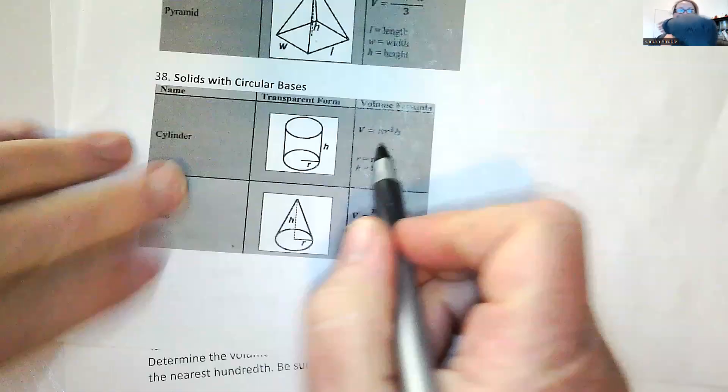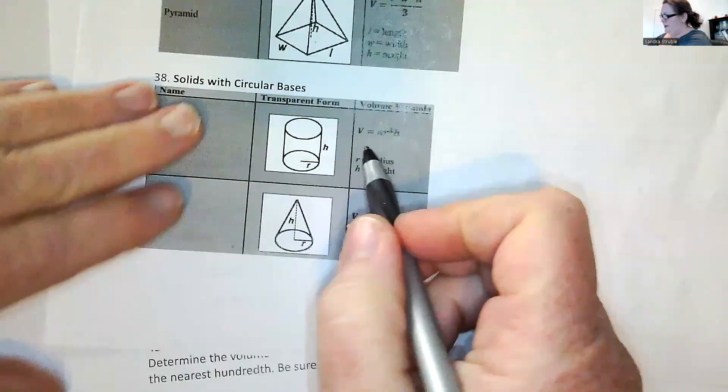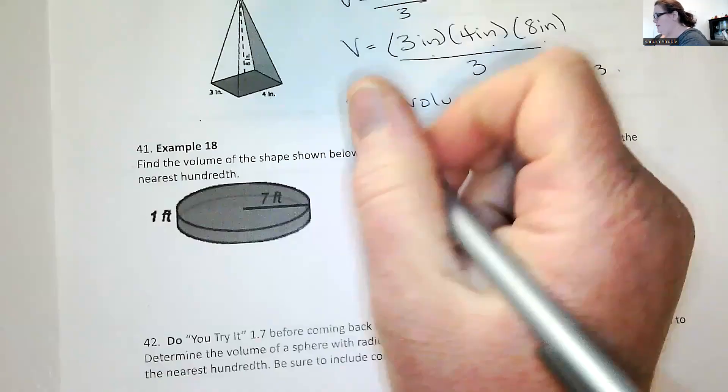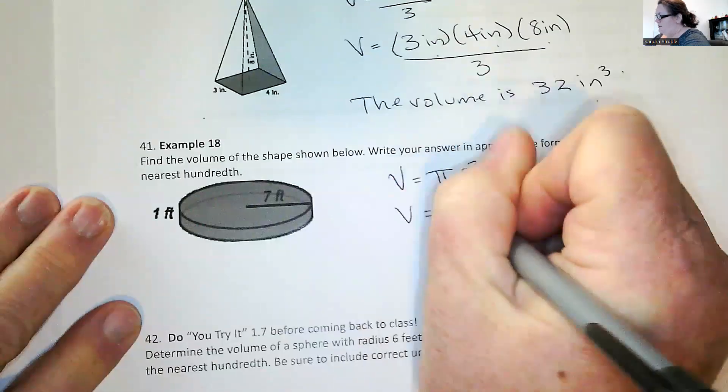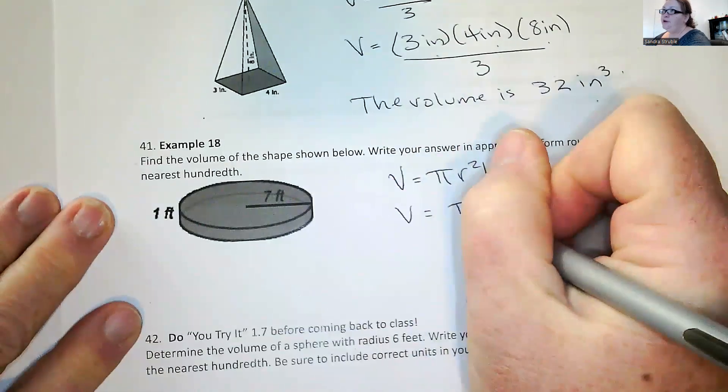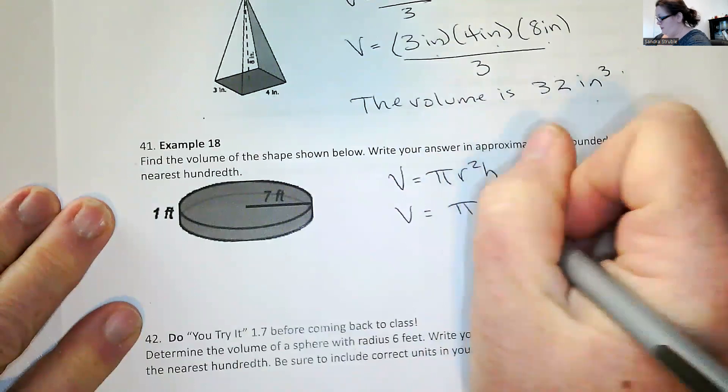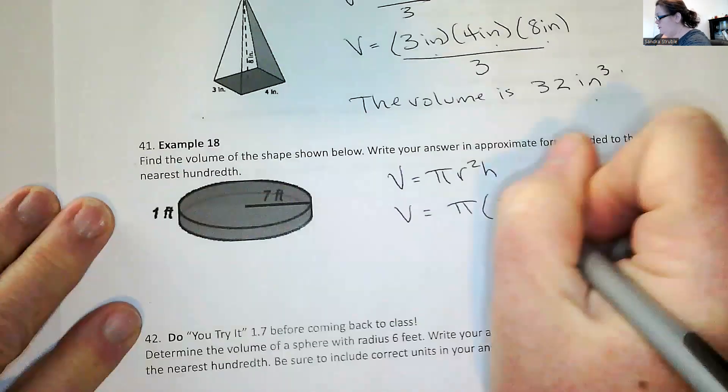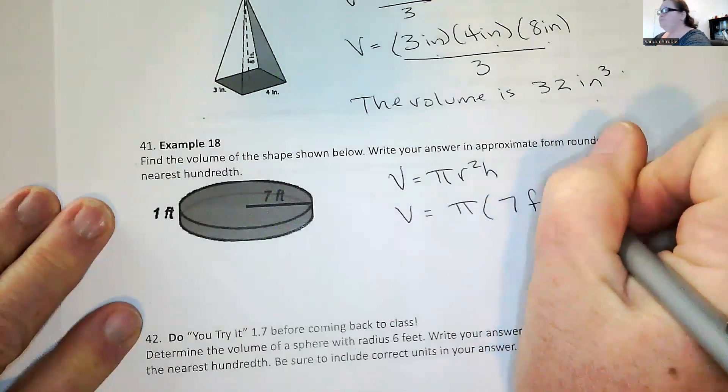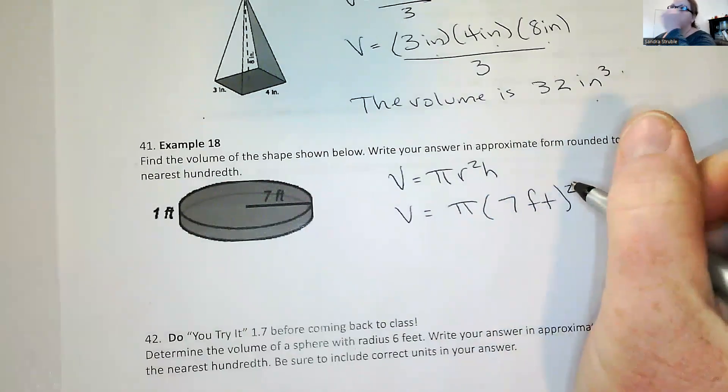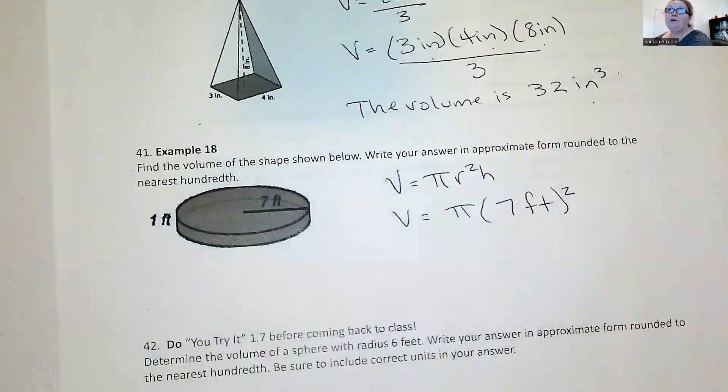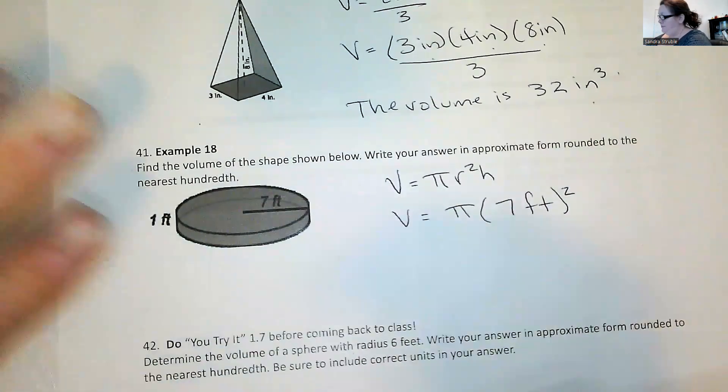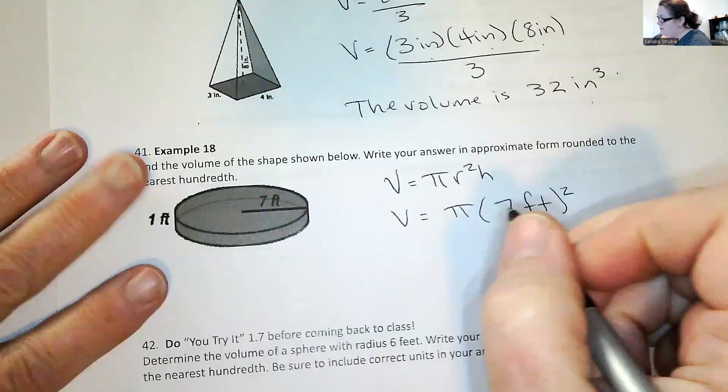So the volume for a cylinder is pi r squared h. So volume is pi. Remember to use your pi symbol on your calculator, not 3.14. The radius is seven feet. So you're not having to find out what that is. Be careful because there's a very good chance that on my exam, I could actually provide you the diameter and you would have to find the radius in order to solve this problem. And then the height is one foot.